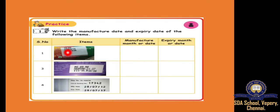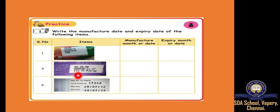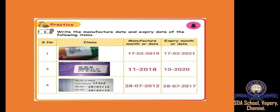For the first exercise, see the biscuit packet. They have asked the manufacture month — manufacture month is 17-2-2019. What is the expiry month? It is 12 months. So within 12 months you have to use this. See this packet — it has 11, 18. 11 means November, so November 2018 is the manufacture date, and here 10, 20 so October 2020 is the expiry date. The same way this one also — 28-7-2012 is the manufacture date and 28-7-2017 is the expiry date.